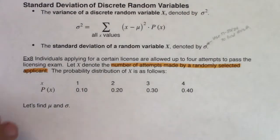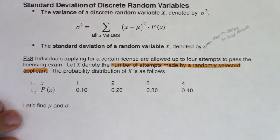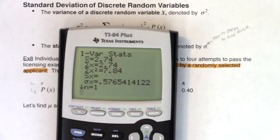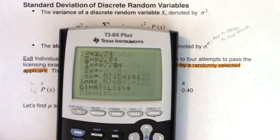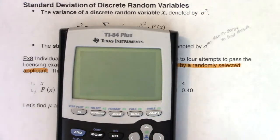Clear out your lists. Like always, let's put our variable into L1 and our probabilities into L2 and see how we can find the mean and standard deviation for this discrete random variable. So once we get that in there, let's go back to our home screen.